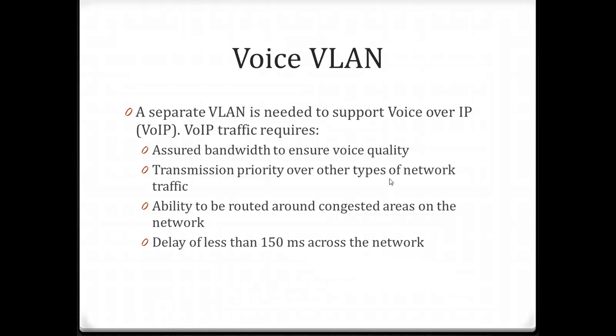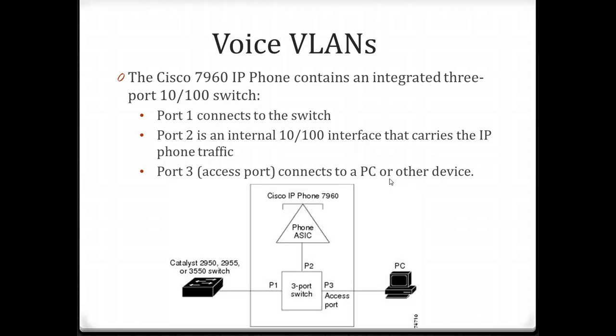Voice over IP is beyond the scope of this class, but it's important to note that when setting up Voice over IP, you do want to use a separate VLAN for that voice traffic. You wouldn't want all that traffic going over the default VLAN 1. Voice over IP traffic requires assured bandwidth for good voice quality, transmission priority over other network traffic to avoid lost calls or buffering, the ability to route around congested network areas, and delays of less than 150 milliseconds. Typically a separate VLAN is dedicated to voice traffic.